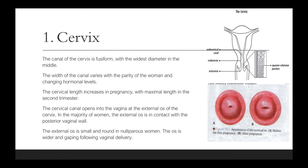The canal of the cervix is fusiform, with the widest diameter in the middle. The width of the canal varies with the parity of the woman and changing hormonal levels. The cervical length increases in pregnancy, with maximal length in the second trimester. The cervical canal opens into the vagina at the external os of the cervix.